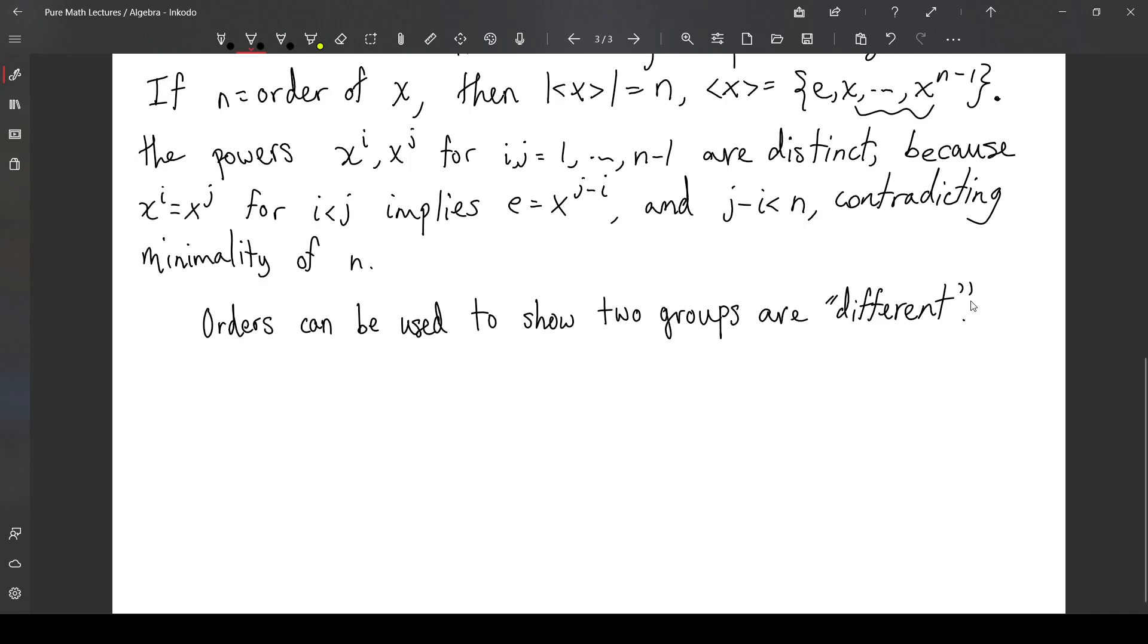And the nuance there is that two groups can be isomorphic even if their sets and their operations on the surface they look different, but they can be encoding the same group structure. And so I'll show that an isomorphism must preserve the order of an element, i.e. if x has order n in one group and I have an isomorphism between the two groups, then f of x must be order n in that other group.